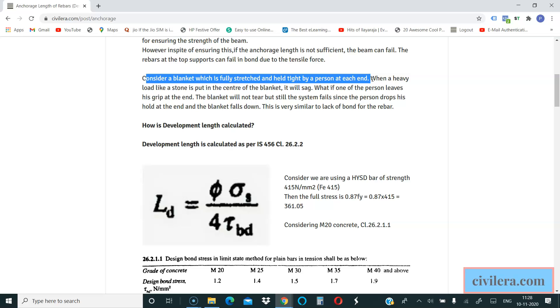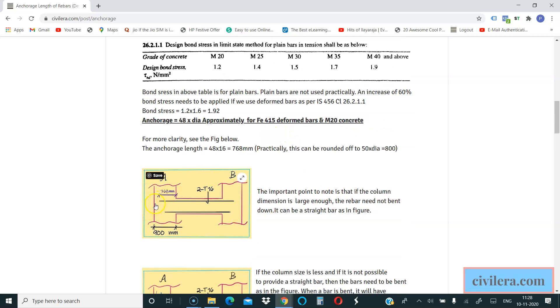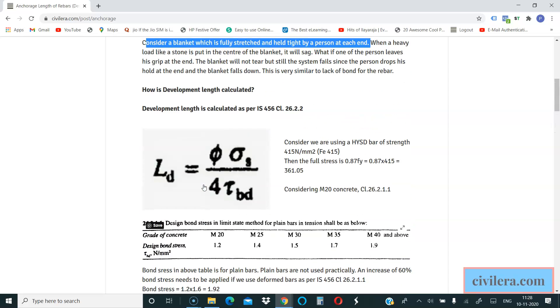The same way, the beam when it sags and when it pulls the rebar due to tension at the ends at the support, if it comes out, if the top bars come out, it is a failure. It's a failure in bond, so this is what we are trying to avoid by having proper anchorage.